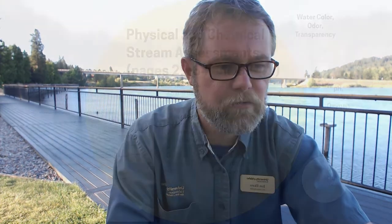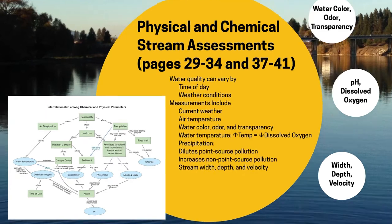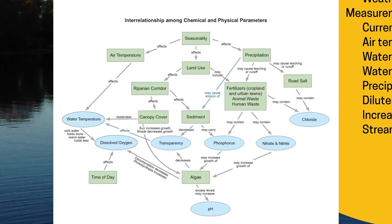First, your readings are affected by the time of day and weather conditions. To improve consistency, it's best to take your measurements about the same time of day. It's okay to take measurements at different times, but a greater discrepancy from previous readings may result. You can include a written note at the end of the form if you monitor at a time different from your normal monitoring events. You can download this flow chart from this module — it's a great demonstration of the interconnectedness of many physical and chemical stream characteristics.